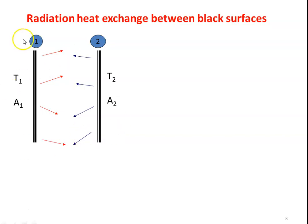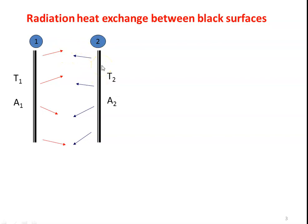Surface 1 has temperature T1 Kelvin and area A1 square meters. Surface 2 has temperature T2 and area A2. The radiation leaving surface 1 falls on surface 2 and is completely absorbed. Similarly, radiation leaving surface 2 falls on surface 1 and is completely absorbed.